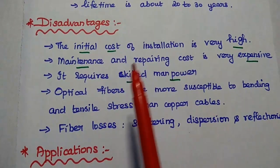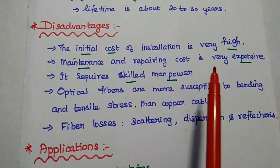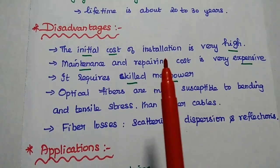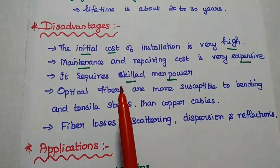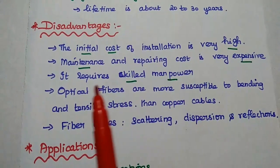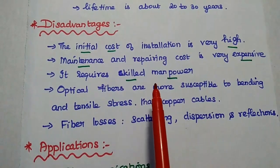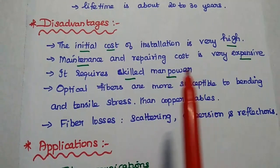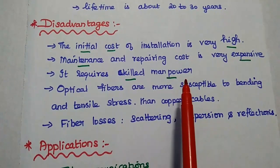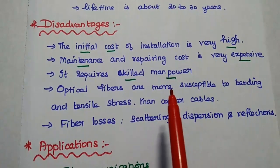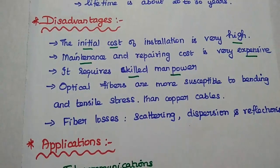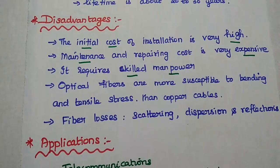Here, the initial cost of installation is very high. Manufacturing the optical fiber is less cost but initial installation requires high cost. Maintenance and repairing cost is also very expensive because of that particular equipment or specific optical equipments. It requires skilled manpower to maintain or repair the optical system. Optical fibers are more susceptible to bending loss and tensile stress than the copper cables.